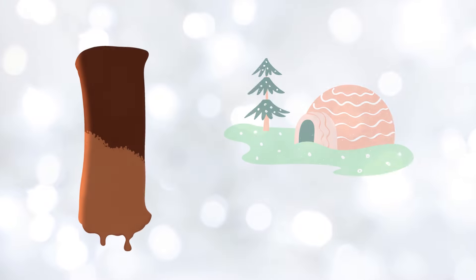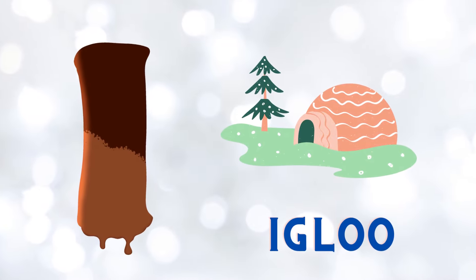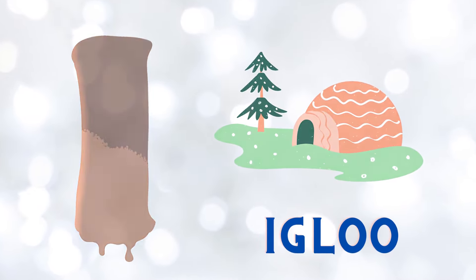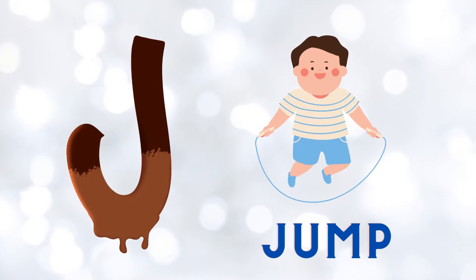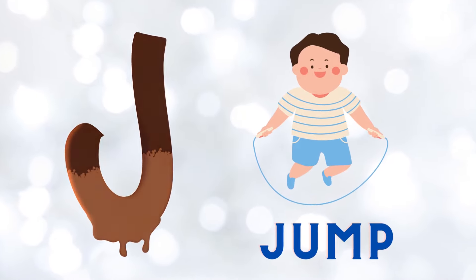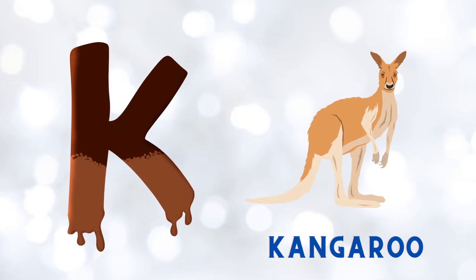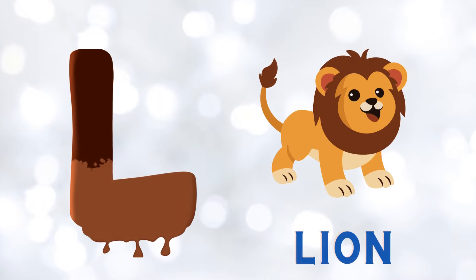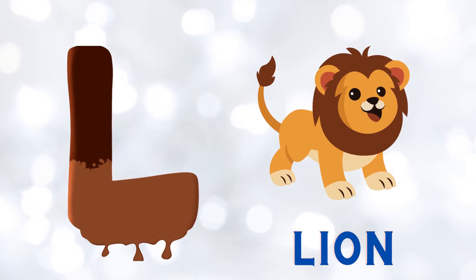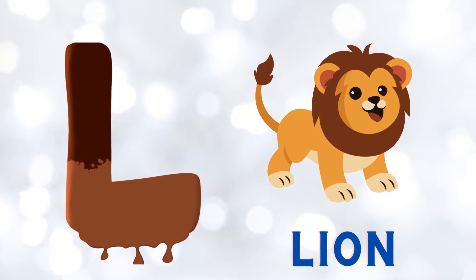I is for igloo, i-i-igloo. J is for jump, j-j-jump. K is for kangaroo, k-k-kangaroo. L is for lion, l-l-lion.